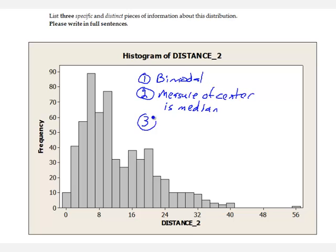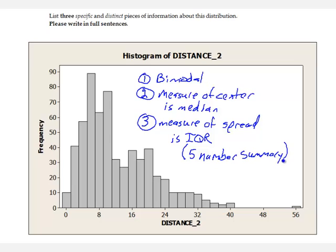And last, the measure of spread is the IQR, the interquartile range, which is Q3 minus Q1. Some people may say to just report the five-number summary. Either of those would be correct.